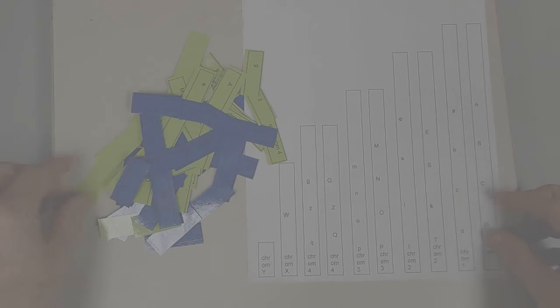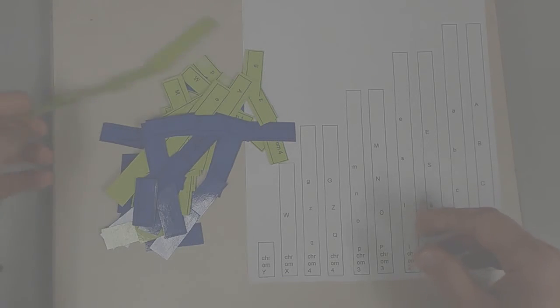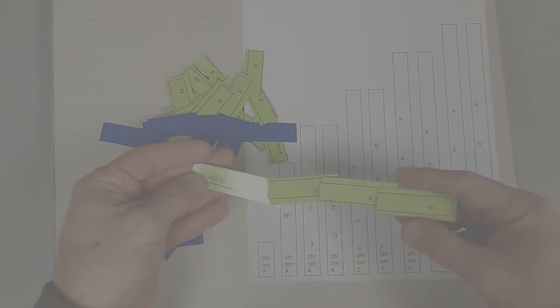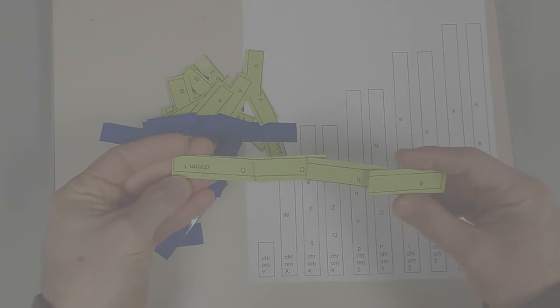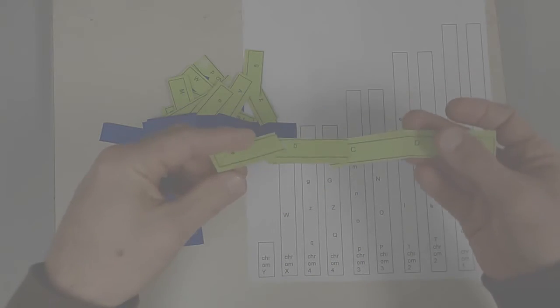Essentially, what you would want to do is find the green ones. Here's one that actually is together pretty much, and you can see it's chromosome 1, and it has A, B, C, and D.